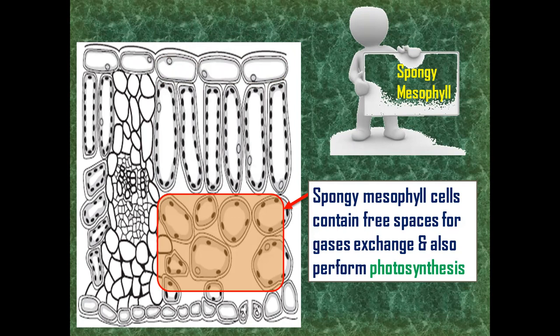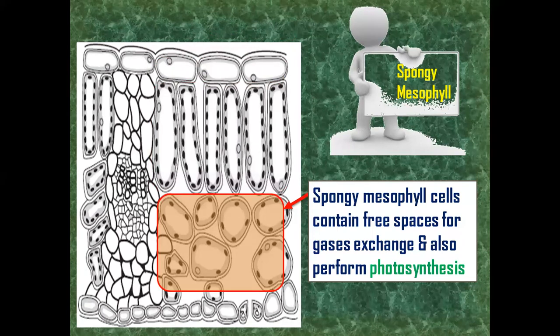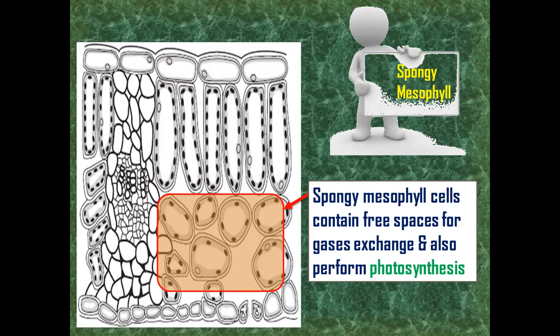This spongy structure provides free spaces for gaseous exchange. These cells also contain chloroplasts, and these chloroplasts help them to also perform photosynthesis. But the number of chloroplasts are comparatively less in spongy mesophyll cells than in the palisade mesophyll layer.